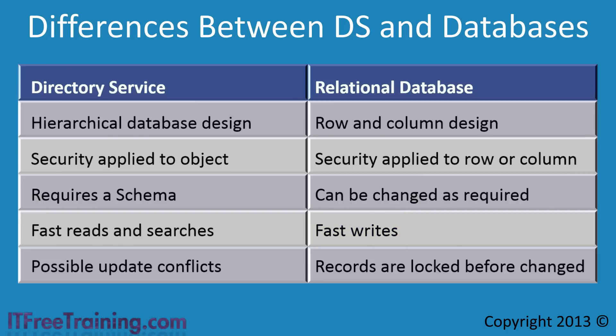The last point to consider is that databases will lock a record when it is updated to prevent multiple people attempting to write to it at the same time. A directory service on the other hand allows multiple updates to be performed simultaneously. If the directory service is in multiple locations, multiple updates may happen at the same time; when changes are synchronized, the directory service uses the most recent change and discards others. For this reason, directory services are useful for applications like staff directories, while banking applications requiring no simultaneous changes are better suited to a database.